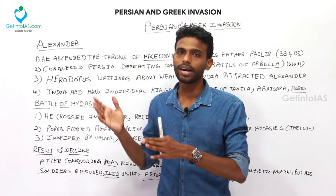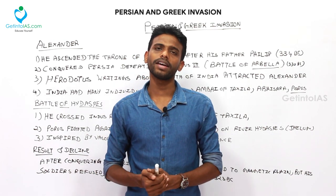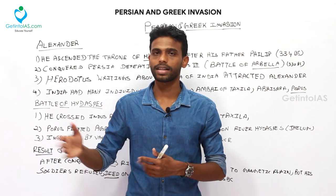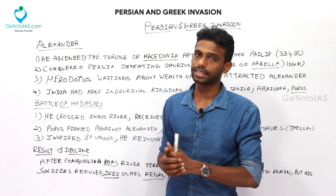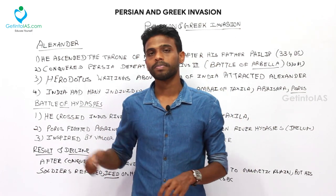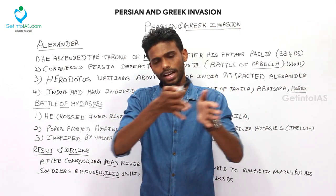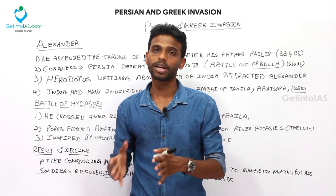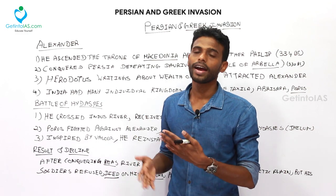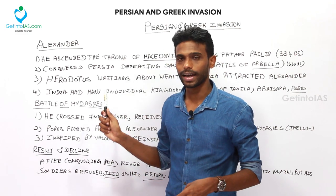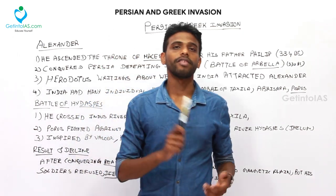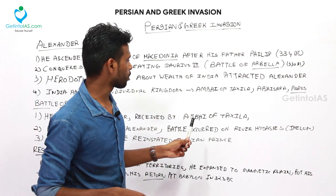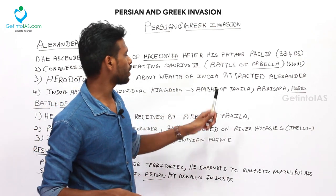When Alexander stepped into India, there were many kingdoms split into groups — Republican tribes in the northwest, and monarchy kingdoms like the Magadha Empire and the Nanda dynasty in the central region. He had to face many tribal groups in the northwest before reaching India. After crossing the Indus River, he was received by Ambi, the ruler of Taxila, who befriended Alexander to avoid war.